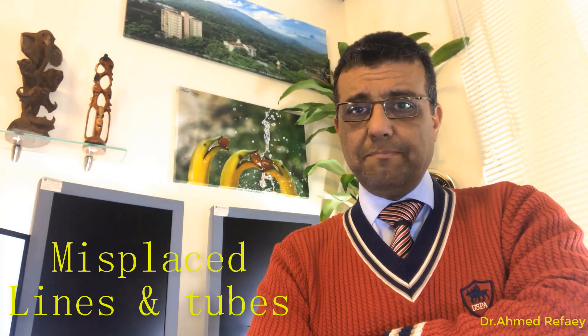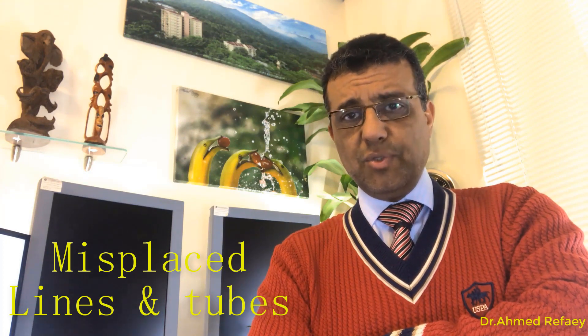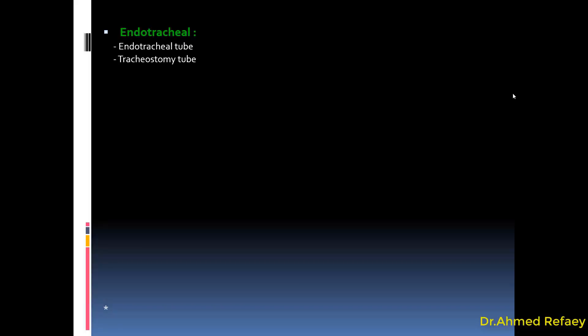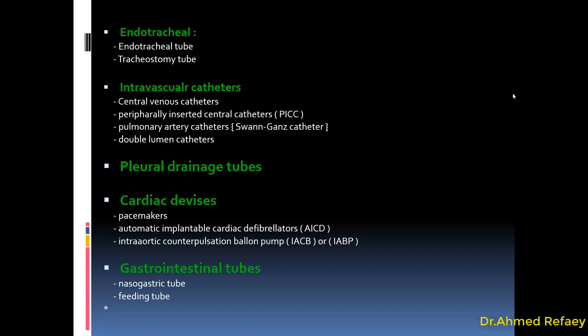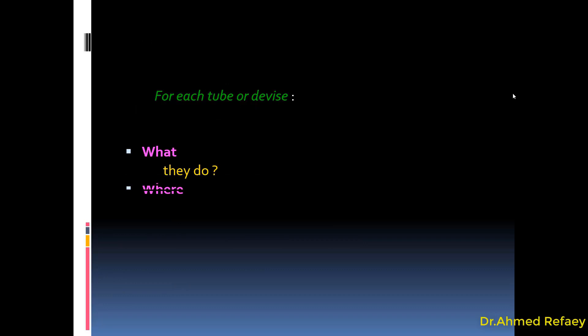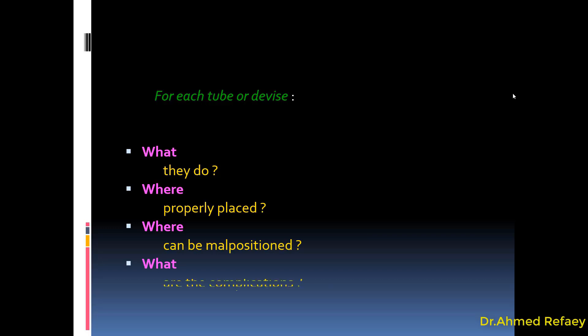My talk today will be about misplaced lines and tubes in the chest. Lines and tubes in the chest can be classified according to the route of insertion into endotracheal tubes, intravascular tubes, pleural drainage tubes, cardiac devices, and gastrointestinal tubes. For each line or device we have to know what they do, where they are properly placed, how they can be malpositioned, and what the complications of this malpositioning are.